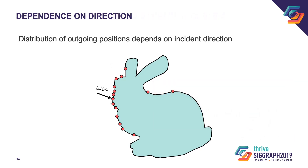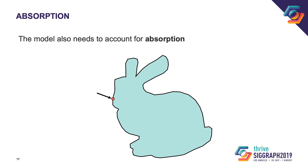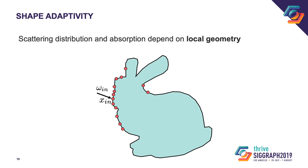While the distribution of outgoing locations depends on the incident direction, we make the approximation that the directional distribution after exiting the object is uniform. It could be interesting to lift this approximation in future work, but for now this is a reasonable approximation for many different cases. One other important aspect is that not all light paths will eventually exit the object — some light paths might enter the object but then get absorbed inside. So we will also have to model this aspect of subsurface scattering.